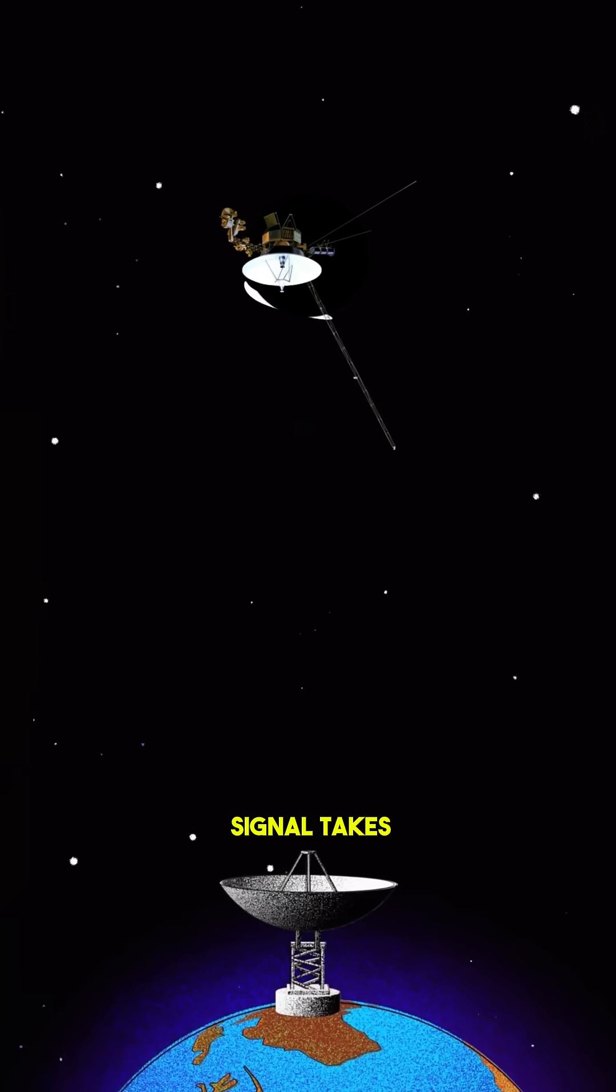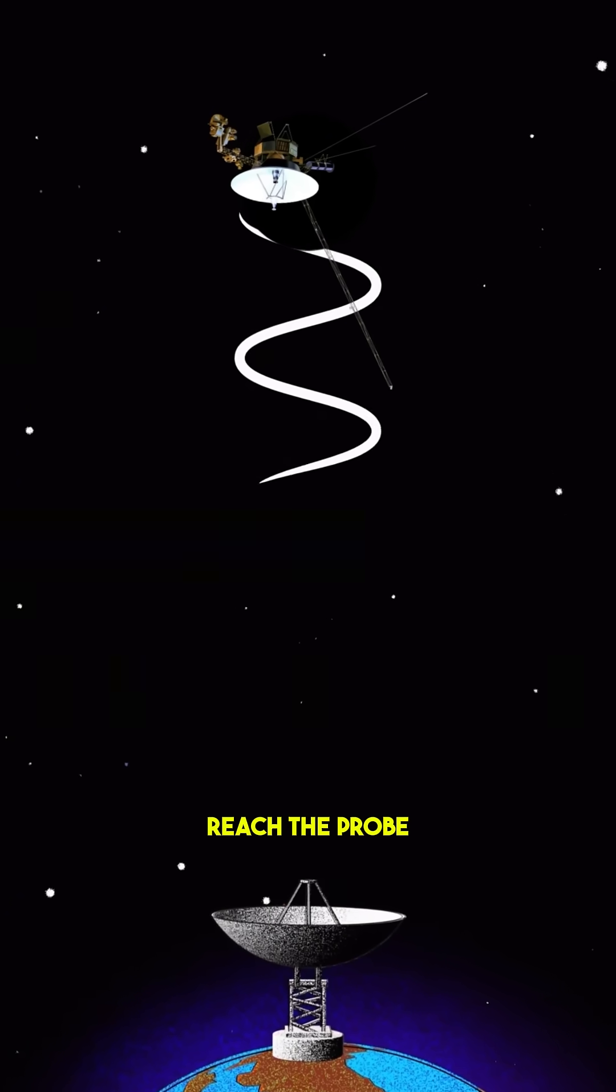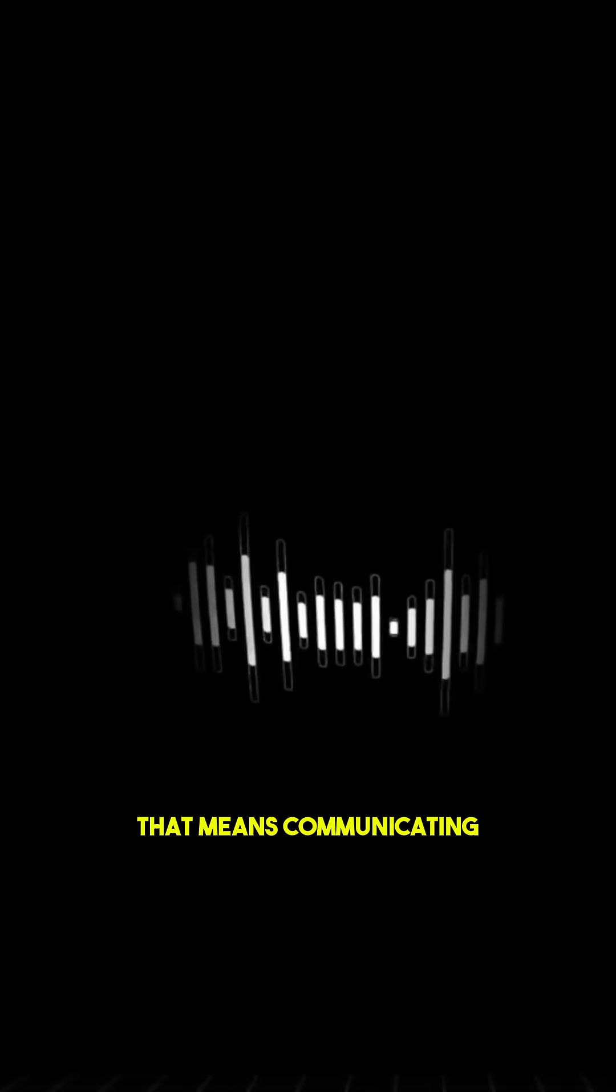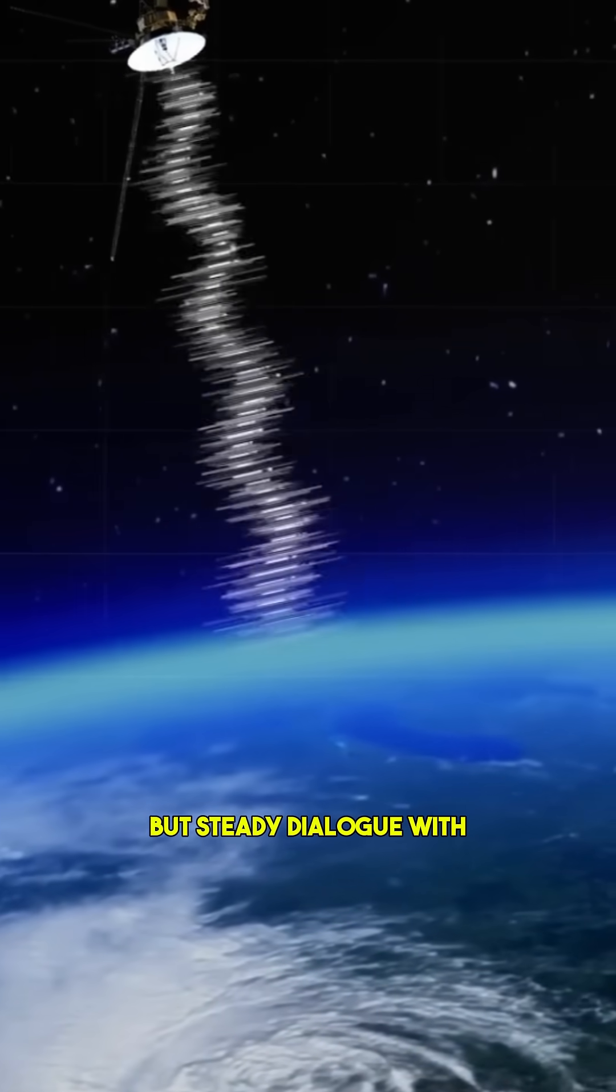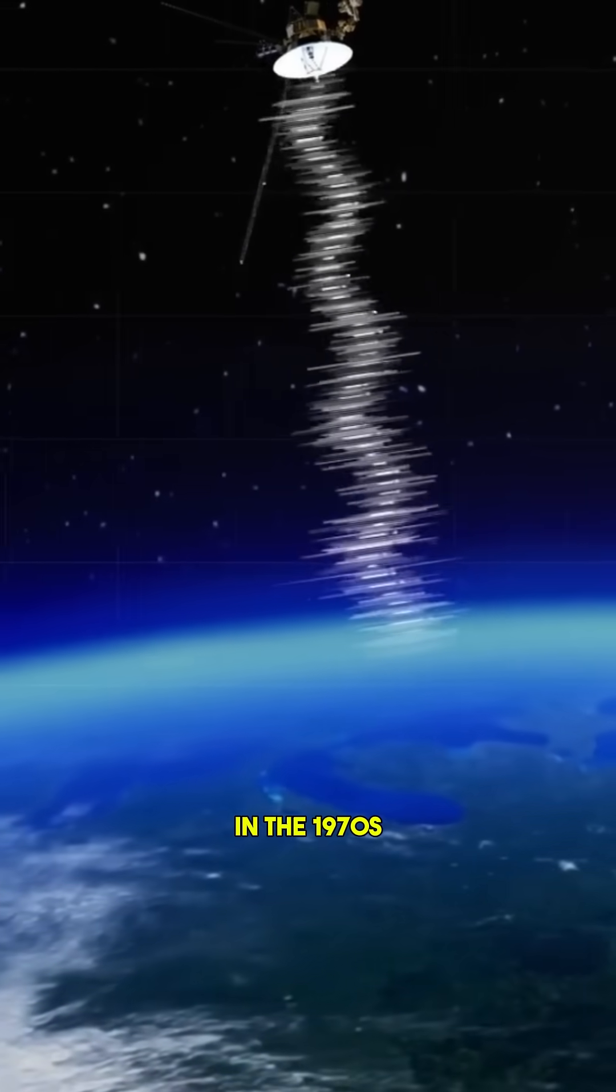At that distance, every radio signal takes a full day to reach the probe and another to return. That means communicating with Voyager 1 is now a 48 hour round trip, a slow but steady dialogue with a machine built in the 1970s.